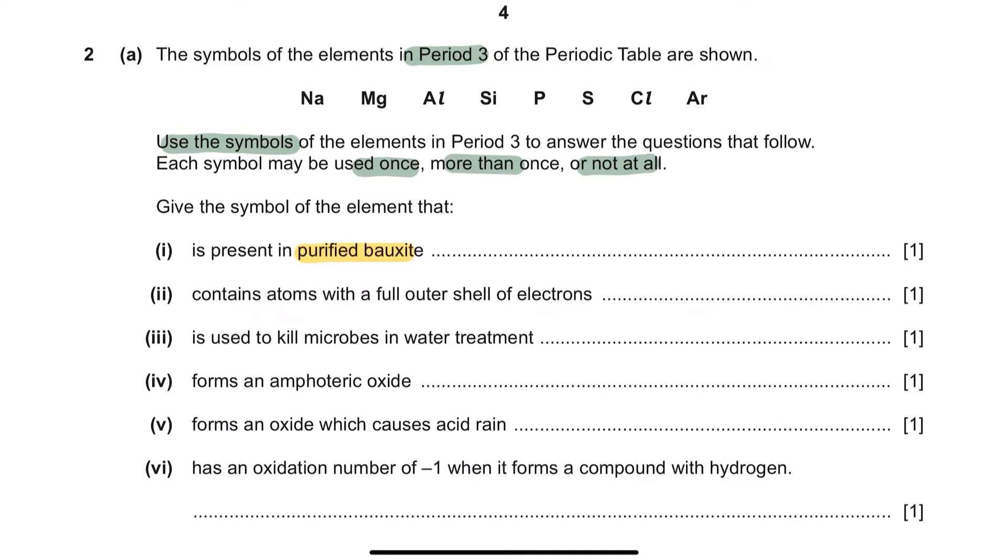is present in purified bauxite. Aluminium is extracted from its ore called aluminium oxide. So, the element present in purified bauxite would be aluminium. Part 2. Contains atoms with a full outer shell of electrons. This means that the atom has 8 electrons on its outer shell and that would be the element present in group 8, which is argon.